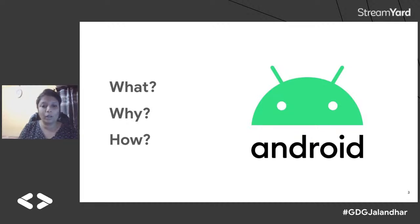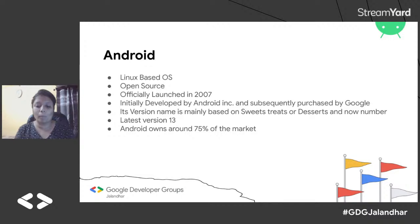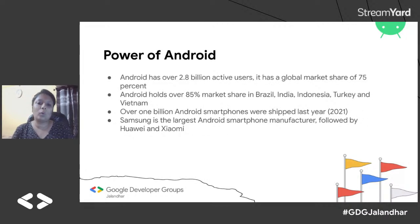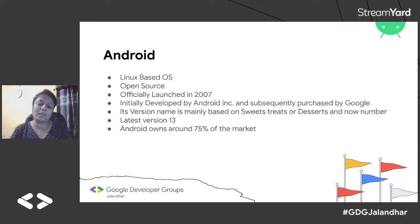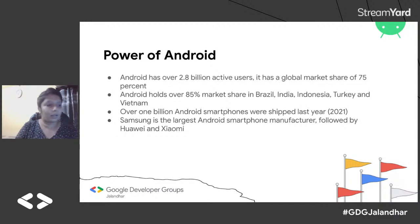There are iOS and other customized operating systems, but if I talk about maximum market share, Android is leading. Android is covering more than 75% of the market share across all devices. To make Android applications, we use Android Studio and write code in Kotlin.